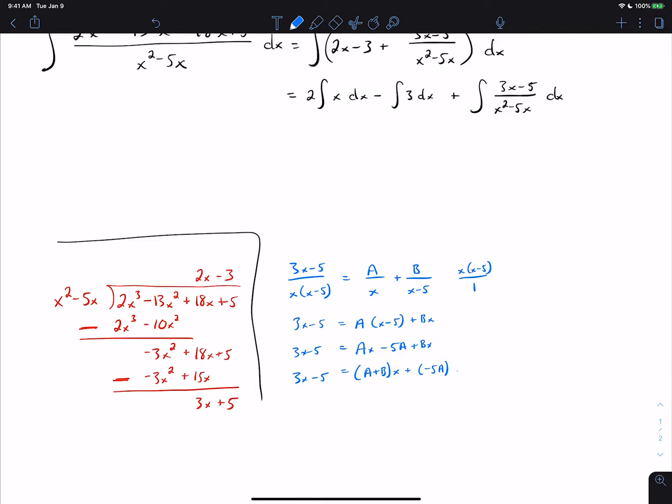A plus b then has to equal 3. And negative 5a equals negative 5. That gets us that a is 1. And plugging into the first equation 1 plus b is 3. So b is 2.